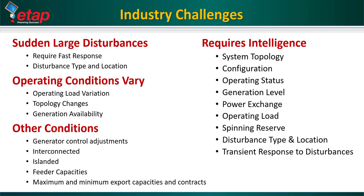Another important factor is the type of disturbance. Non-proactive systems do not differentiate between the type and location of the disturbance. Also, load is not constant. Every system is unique, but what is common is the variation in loading — sometimes it could be cyclic or it could be random. Depending on how much load is in the system at the time of a disturbance, the load shedding system needs to respond accordingly.